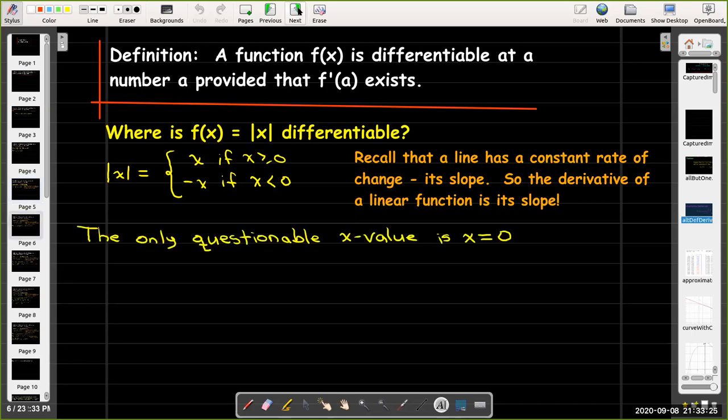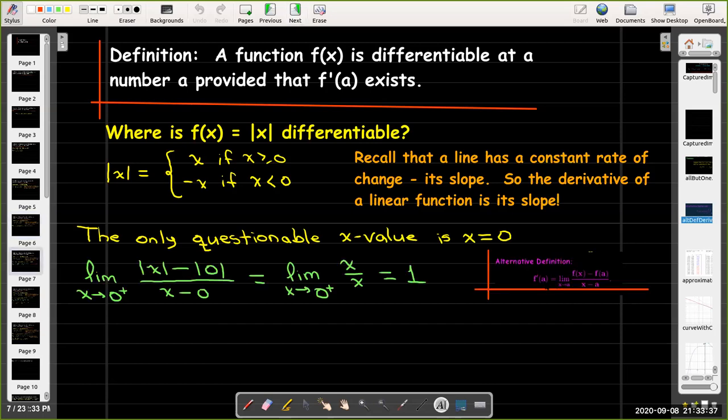But what happens when x equals zero? Well, let's go back to the definition. But we're going to approach zero from the left and from the right. And we're going to go back and remember this alternative definition for the derivative. We could say that f'(a) is the limit as x approaches a of the quotient f(x) - f(a) all over x - a.